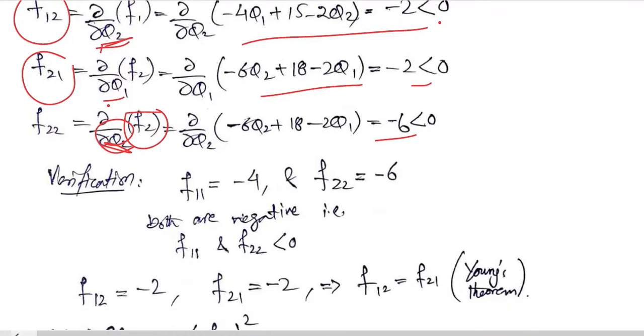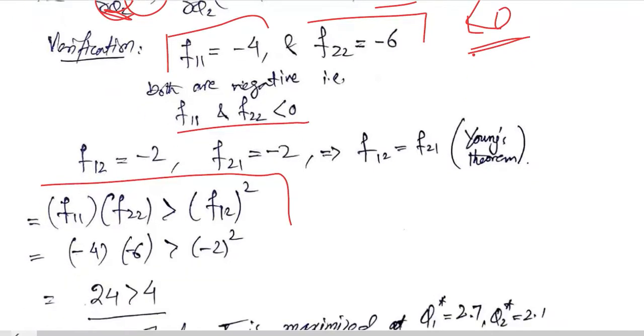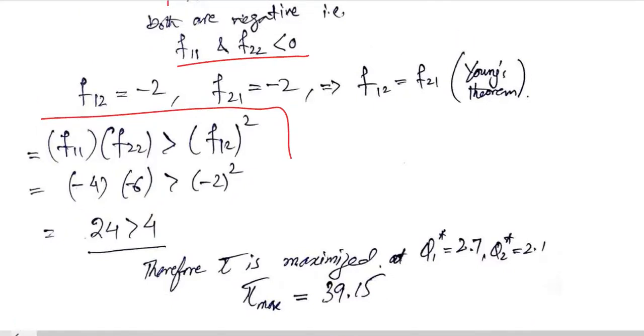So now it is possible for us to verify the presence of maximum. For that we see that F11 and F22 both are negative, which means that the first part of the second order condition is fulfilled. However, the second part is here. We substitute the values: F11, then F22, then F12. Substituting these values we get the satisfaction of this inequality, which is the second part of the second order condition.